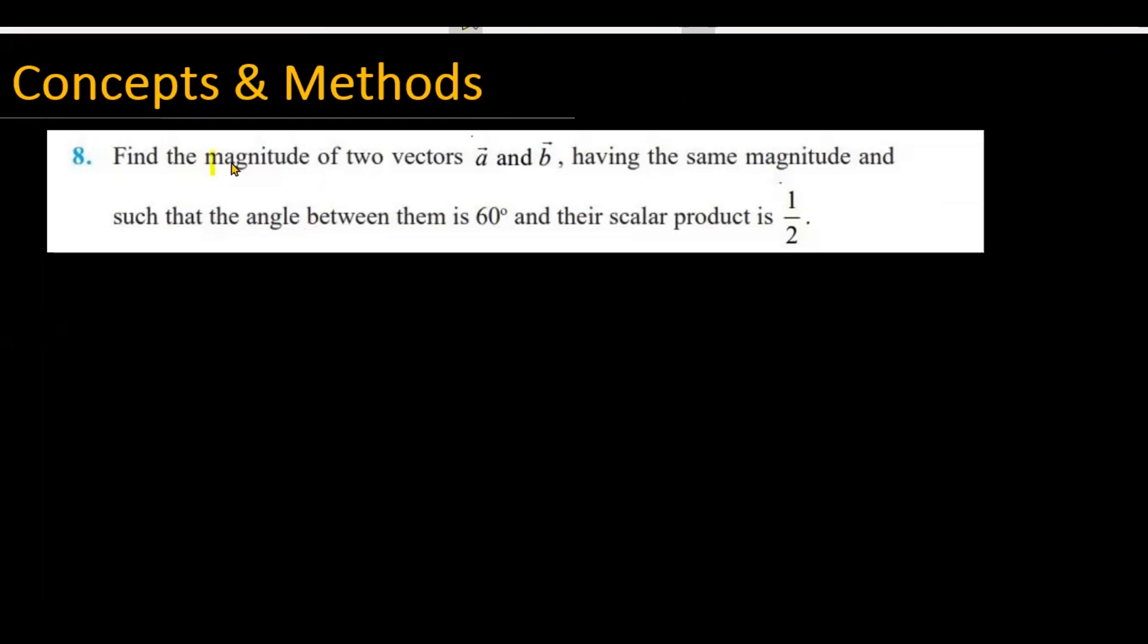The question is: find the magnitude of two vectors A and B having the same magnitude, such that the angle between them is 60° and their scalar product is 1/2.